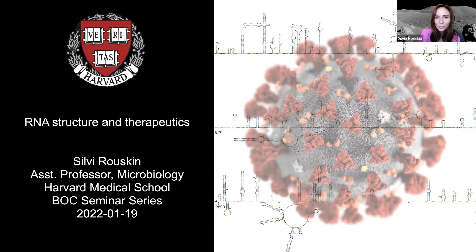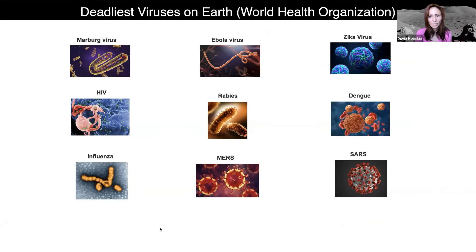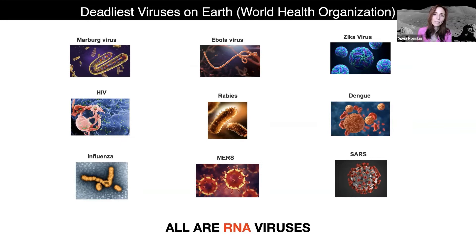I'd like to start with a recent report from the World Health Organization about the deadliest viruses on earth. Here I'm showing you the top nine, which include viruses like Zika, Ebola, Dengue, HIV, influenza, and SARS. This is a very diverse set of viruses that infect different cell types and cause different disease. But one thing common to all of them is that they're all RNA viruses, meaning that they store their genetic material as RNA. My lab was previously focused on HIV, looking at the shapes it forms in the cell and their implication for HIV infection. But with the pandemic, I realized that the methods we developed were directly applicable to SARS-CoV-2.